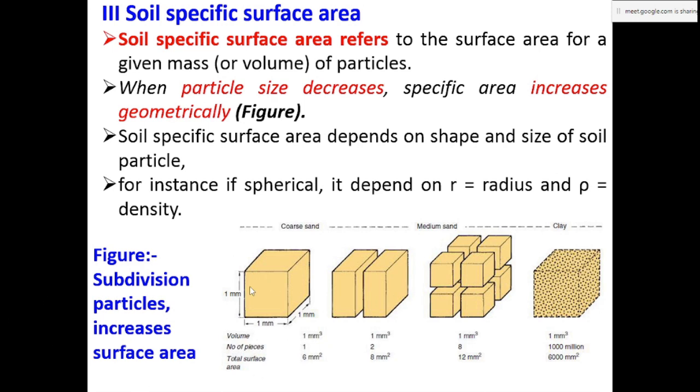Here the big particle is one coarse sand particle, one millimeter in height, breadth, and length. The volume is one cubic millimeter. Number of pieces: one. Total surface area: six square millimeters.